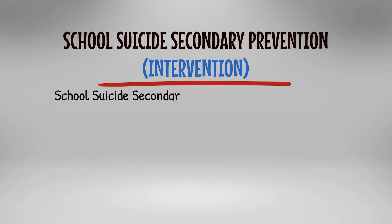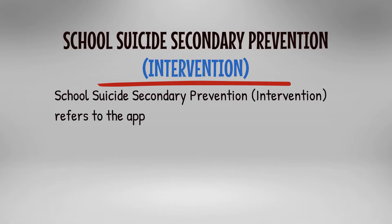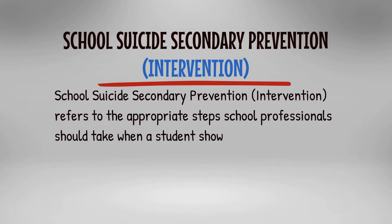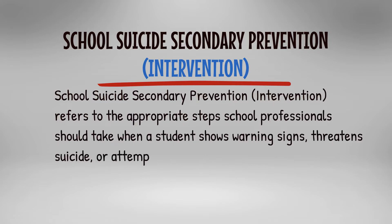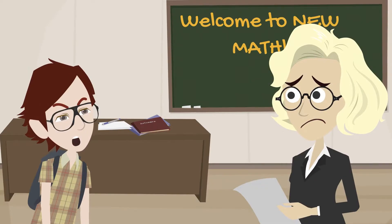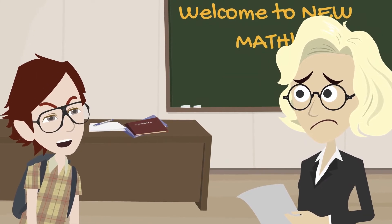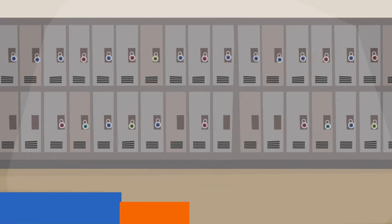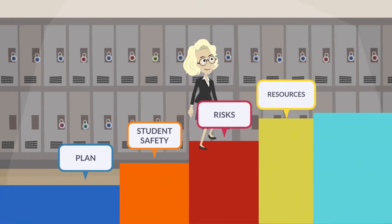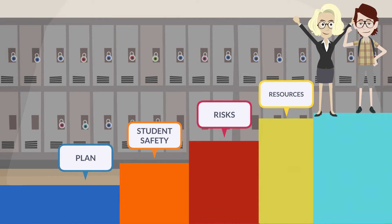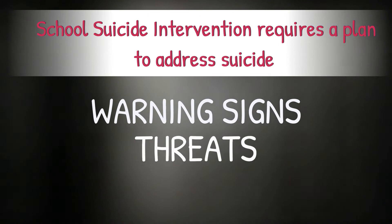Implement activities that increase school connectedness. School Suicide Secondary Prevention refers to the appropriate steps school professionals should take when a student shows warning signs, threatens suicide, or attempts suicide. When an adolescent shows warning signs or makes a suicidal threat to a school professional, it is crucial that the school professional follow the steps outlined in the intervention plan. School Suicide Intervention requires a plan to address suicide warning signs, threats, and attempts.